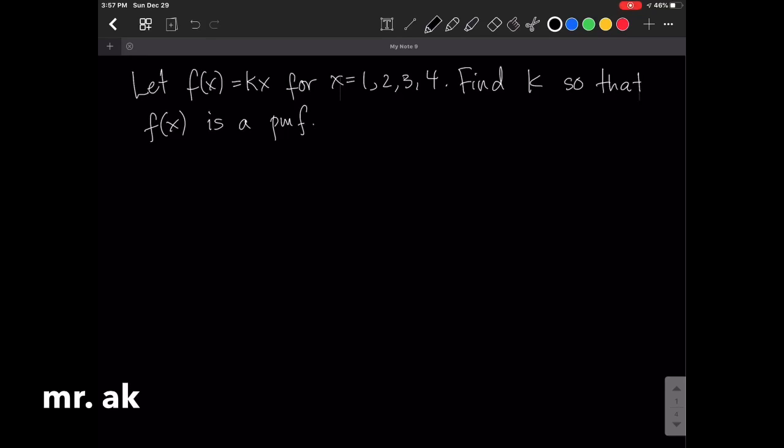So let f(x) equal to k times x for x equals 1, 2, 3, and 4. Find k so that f(x) is a probability mass function.